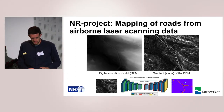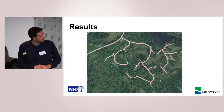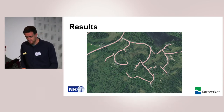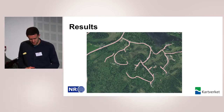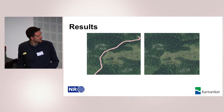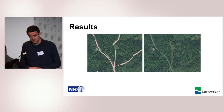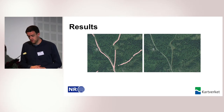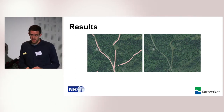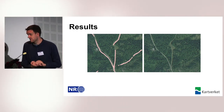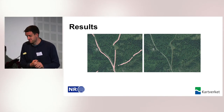The results are somewhat good and somewhat bad. We have some missing links where the network isn't able to connect road segments, and we also have a problem with rivers — they look a lot like roads.